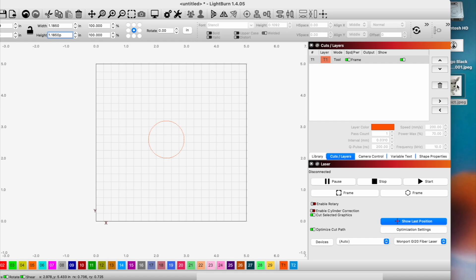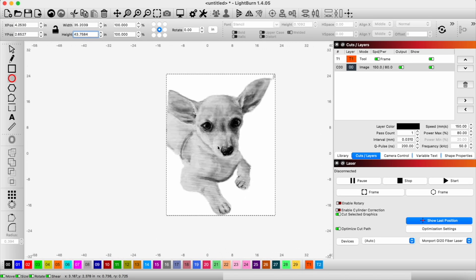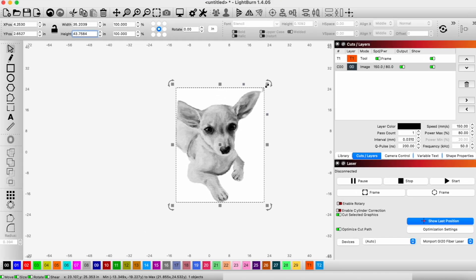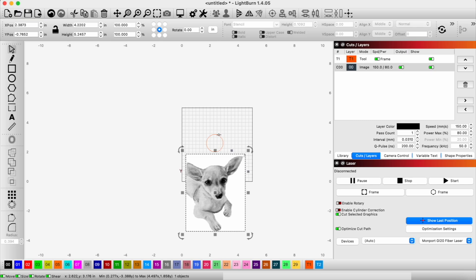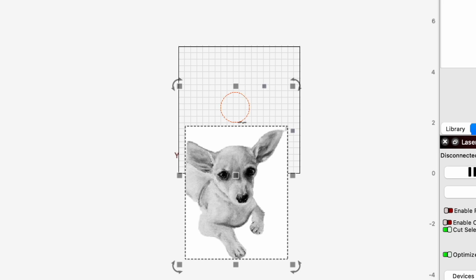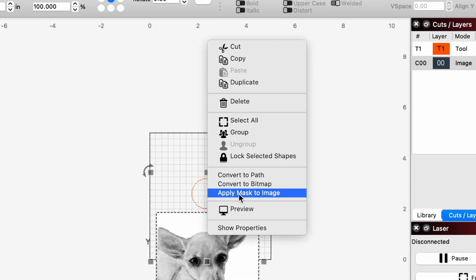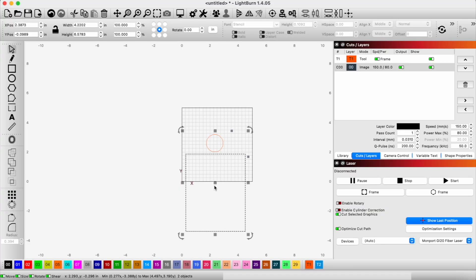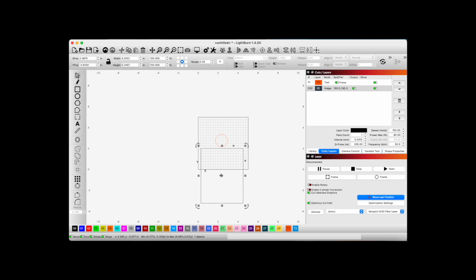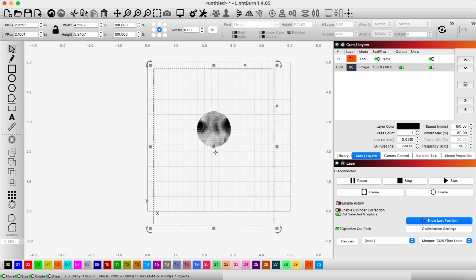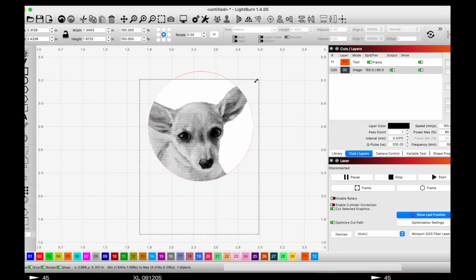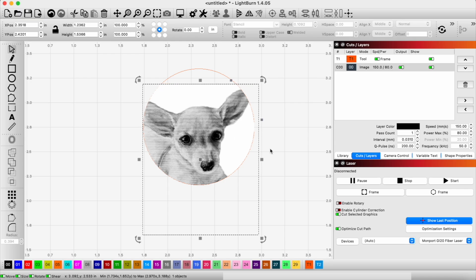We've got this little picture of Daisy here, and we're going to resize this. What I want to do is select our image here, and then select our toolpath, our outline of our pendant, and then right-click and apply mask to the image. What this will do is use that toolpath to cut out the shape of the picture itself. And now I can resize this. Okay, that looks good to me.